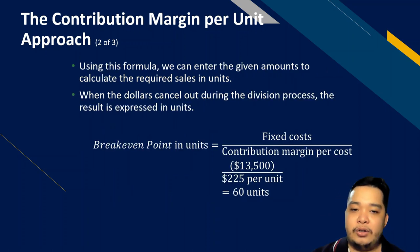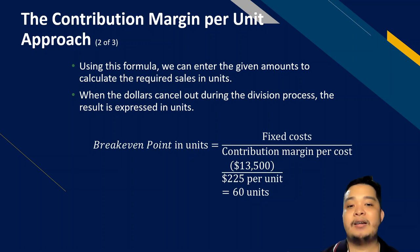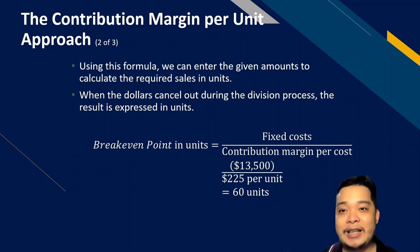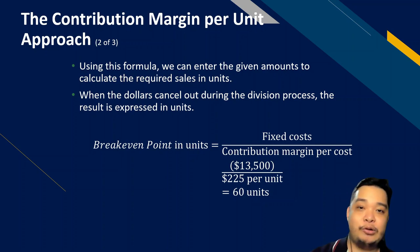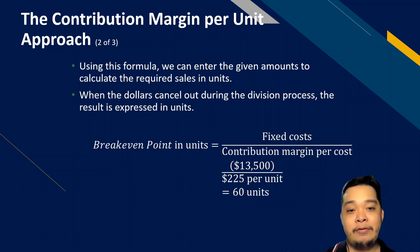Applying the formula: fixed cost of $13,500 divided by contribution margin per unit of $225 gives 60 units — the same answer as the equation approach. This approach doesn't require writing out the full algebraic equation; it synthesizes the concept in a more business-intuitive manner.